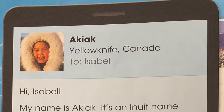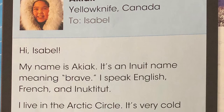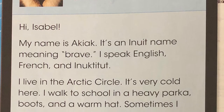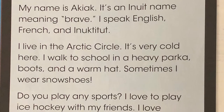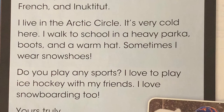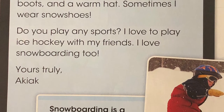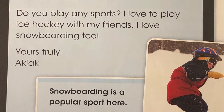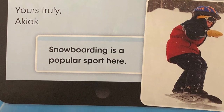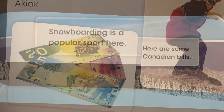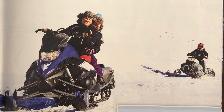Akiak, Yellowknife, Canada. To Isabel. Hi, Isabel. My name is Akiak. It's an Inuit name meaning brave. I speak English, French, and Inuktitut. I live in the Arctic Circle. It's very cold here. I walk to school in a heavy parka, boots, and a warm hat. Sometimes I wear snowshoes. Do you play any sports? I love to play ice hockey with my friends. I love snowboarding too. Yours truly, Akiak. Snowboarding is a popular sport here. Here are some Canadian bills. Snowmobiles help us move quickly across the snow.